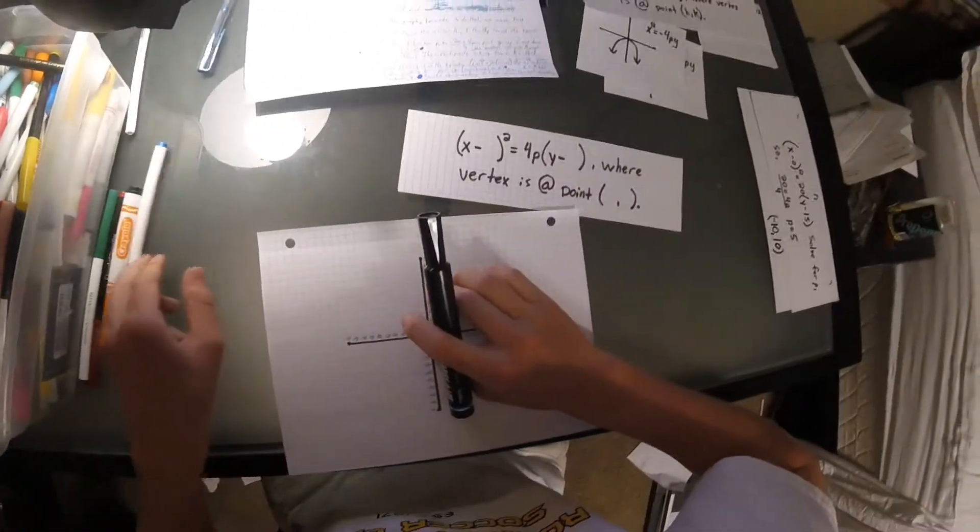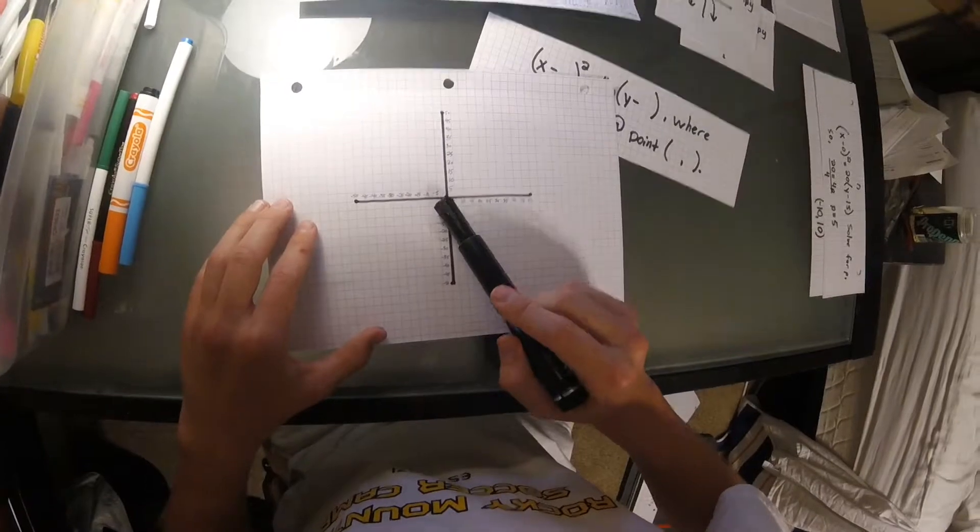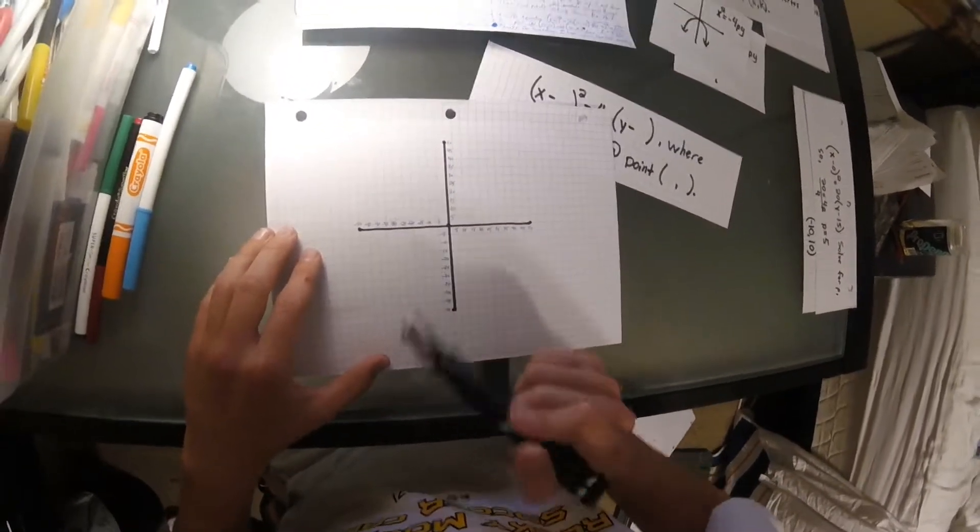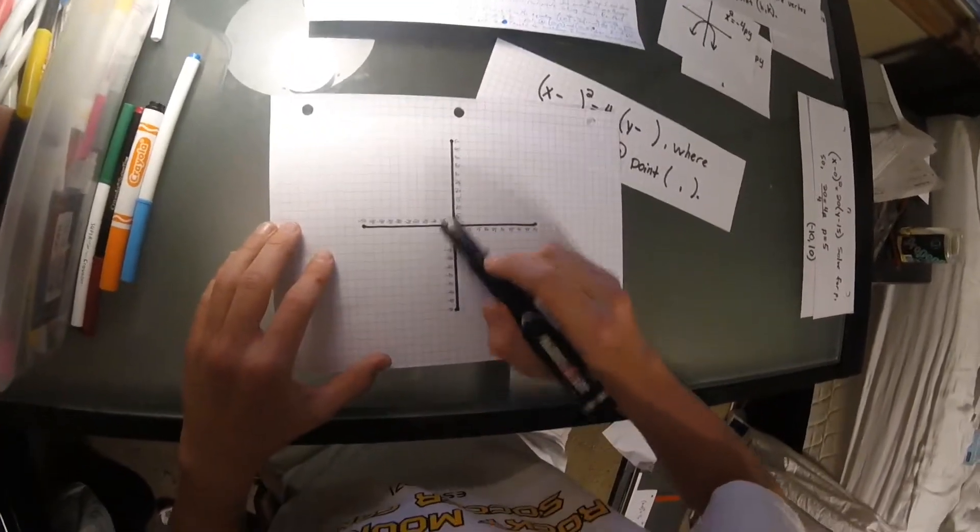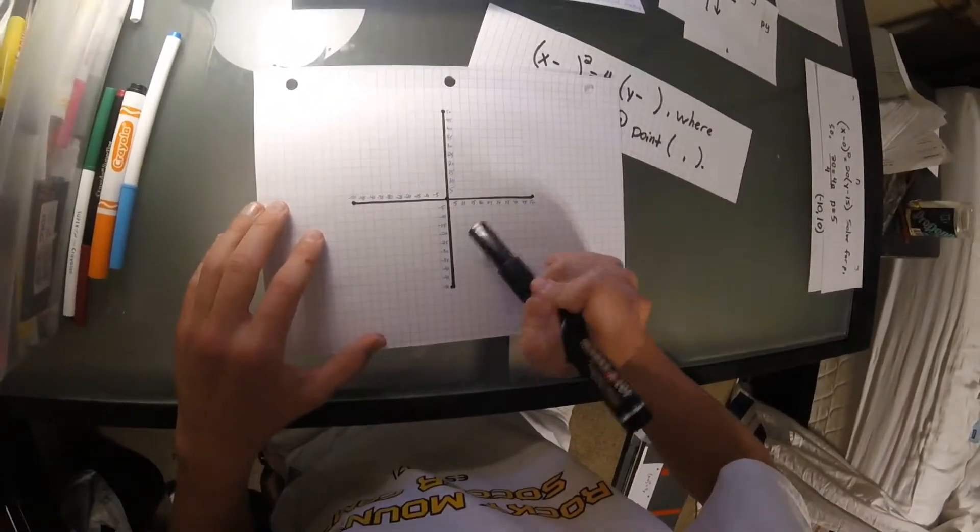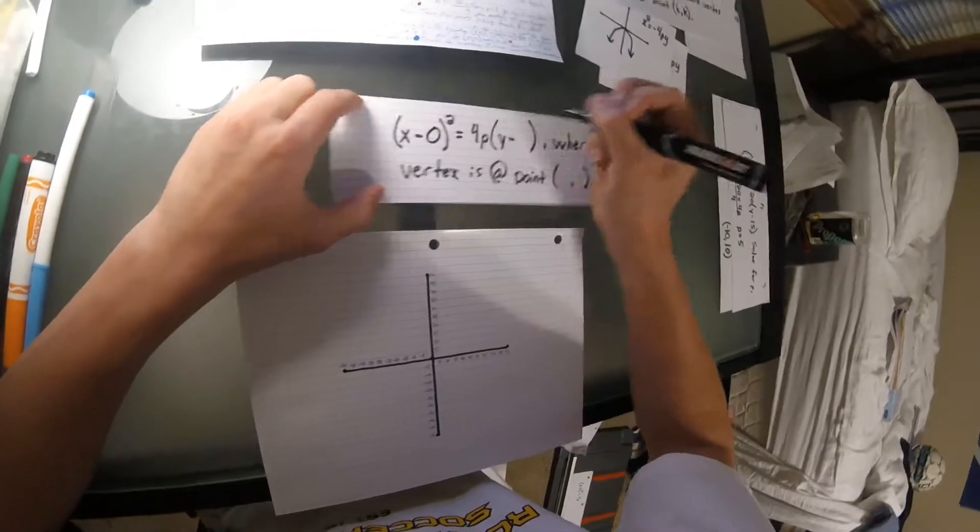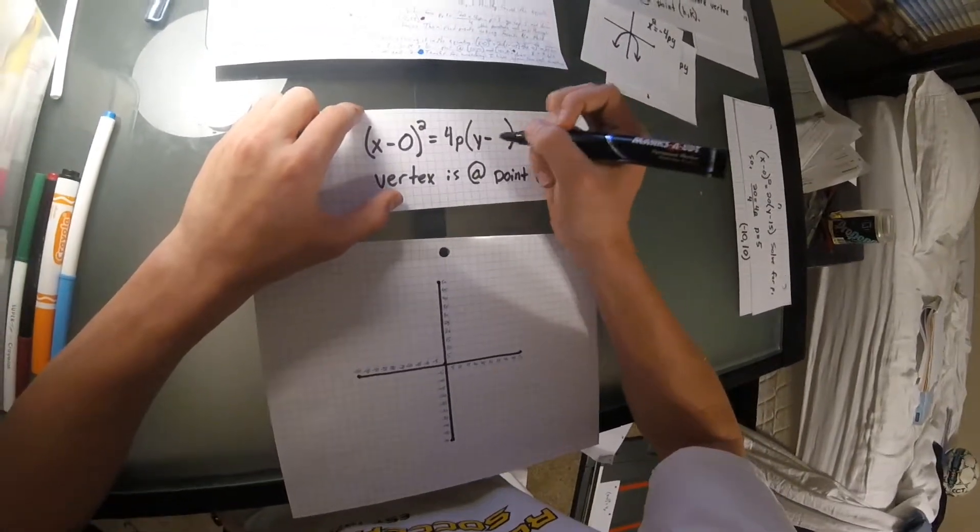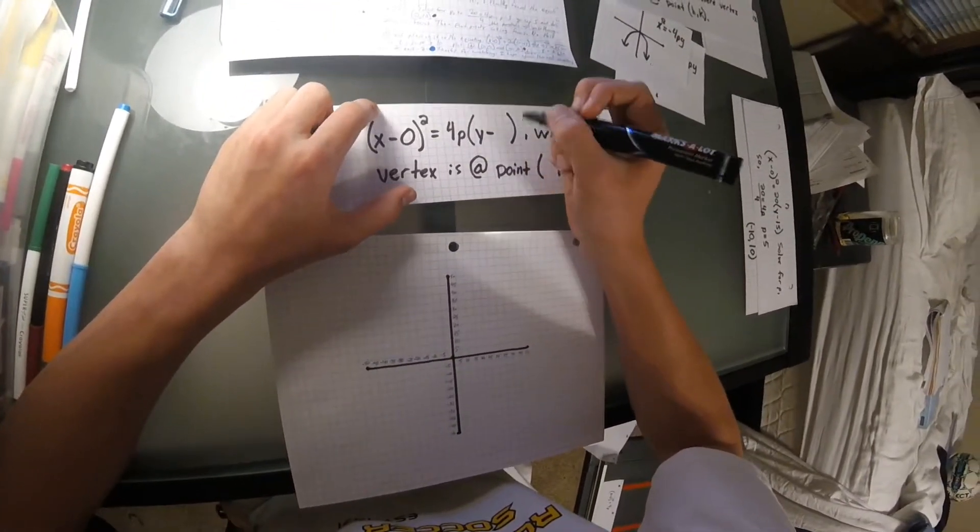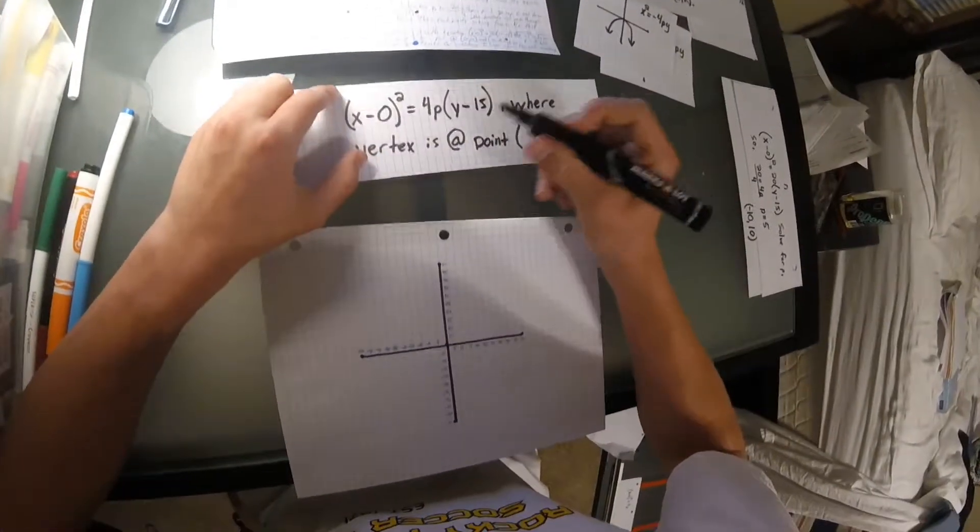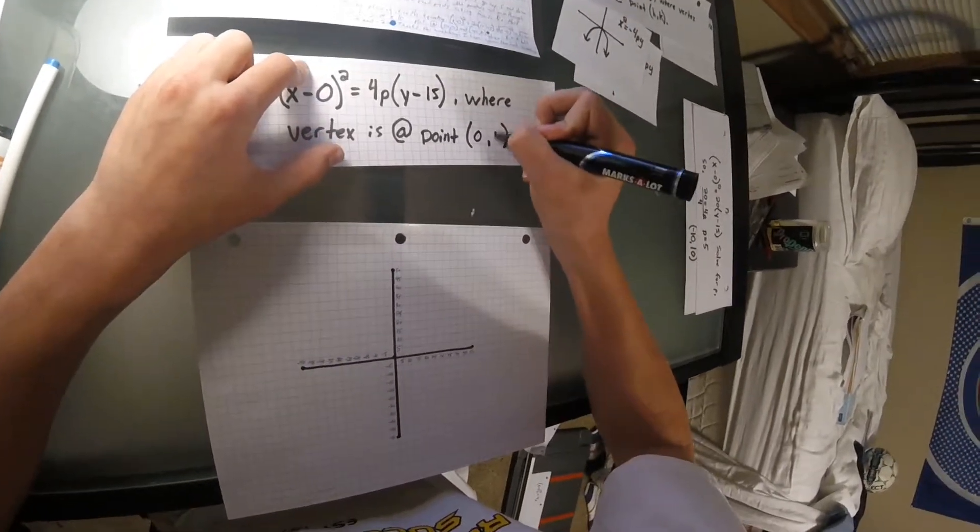So, when I kicked the soccer ball, it reached a maximum height of about 15 feet. Now, I would like my vertex to be on the center of the x axis. So, the x value is going to be zero, and the height that I kicked it at, 15 feet, is going to be my y value. So, x minus zero quantity squared is equal to 4p times y minus 15, where the vertex is at point 0, 15.